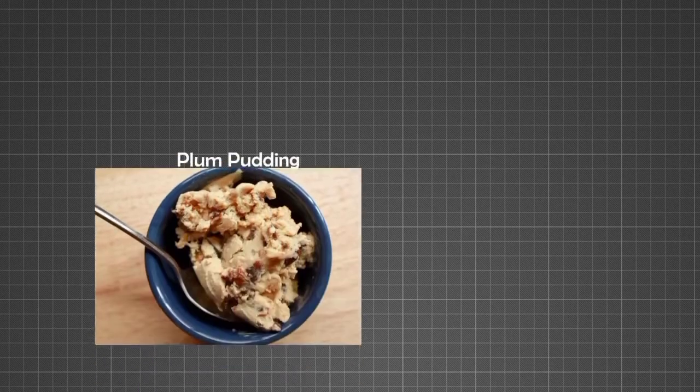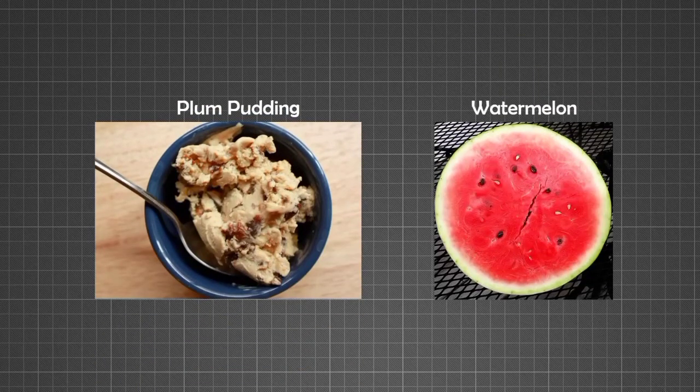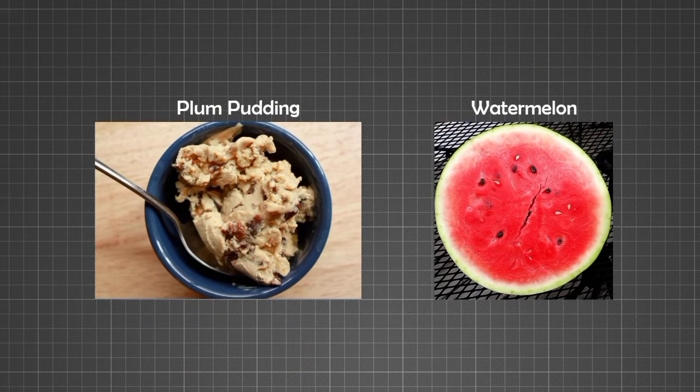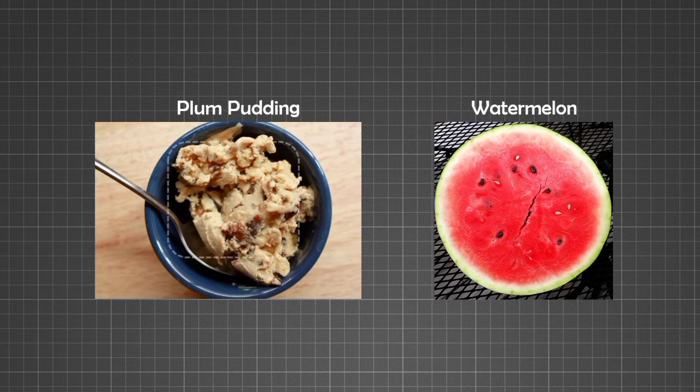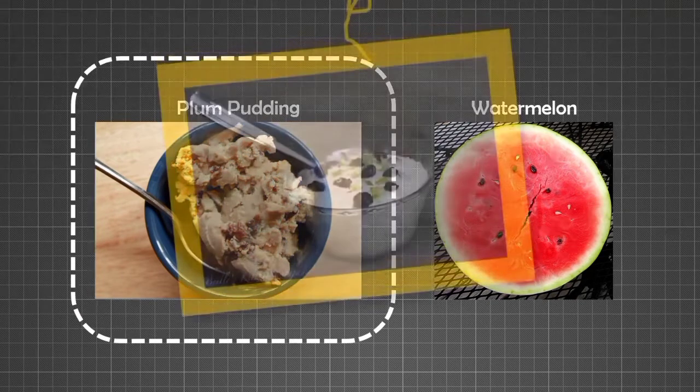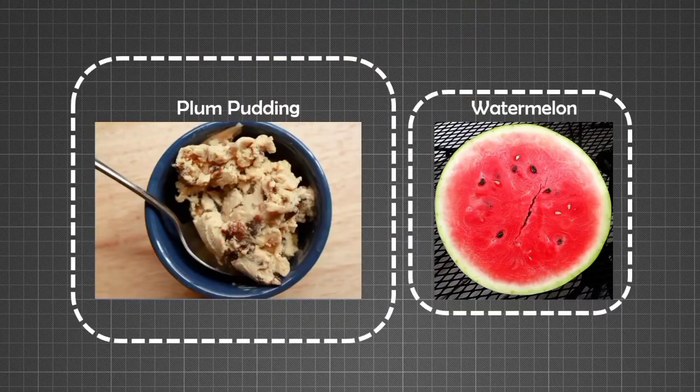Thompson's Atomic Model. All of us have seen a plum pudding and a watermelon in our daily life. Do you know one of the early models of an atom has been compared to a plum pudding, resin pudding and even a watermelon?